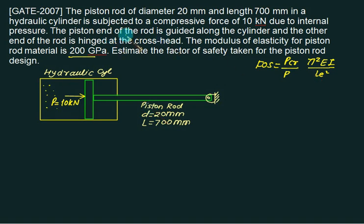For LE, he says that the piston end of the rod is guided along the cylinder. If it is guided by this one, then it will be fixed-fixed. And then LE will be equal to 0.7L.